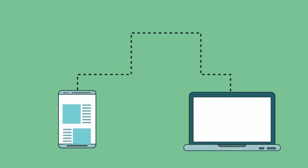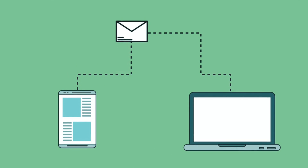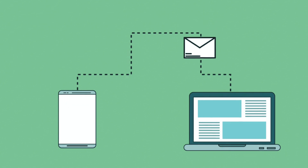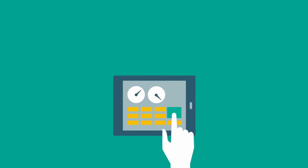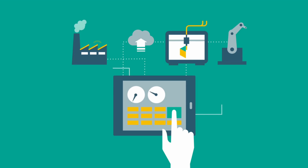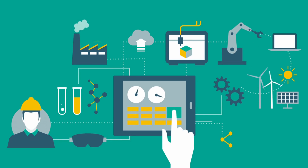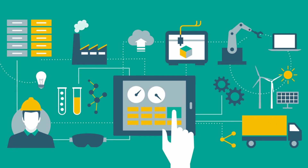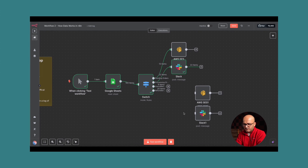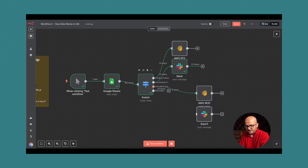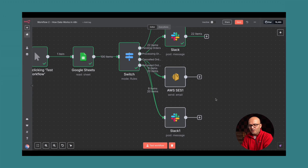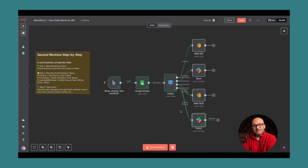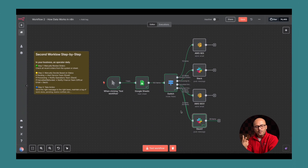Now you totally understand how item linking works with the CodeNode and the Merge node. In the next lesson of this course I'll talk all about APIs — how they differ from webhooks — and the HTTP node, which is one of the most important nodes of N8n. I'll explain all this while building a practical automation workflow step by step. I'll see you in the next lesson.